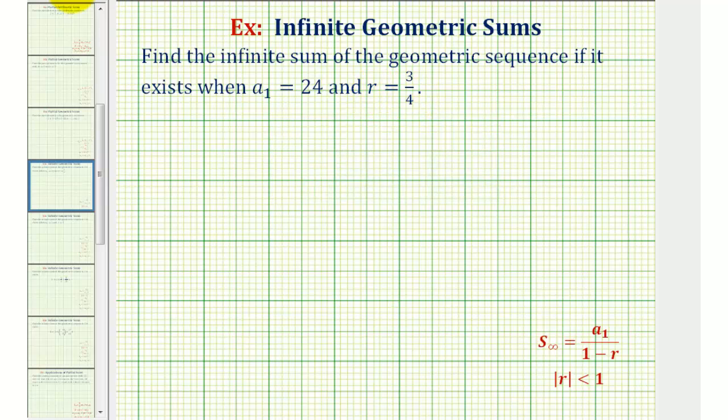We are able to find the infinite sum of a geometric sequence if the absolute value of r is less than one. So if it doesn't meet this condition, then the infinite sum will not exist. And since we're given r equals three-fourths, we can find this infinite sum.